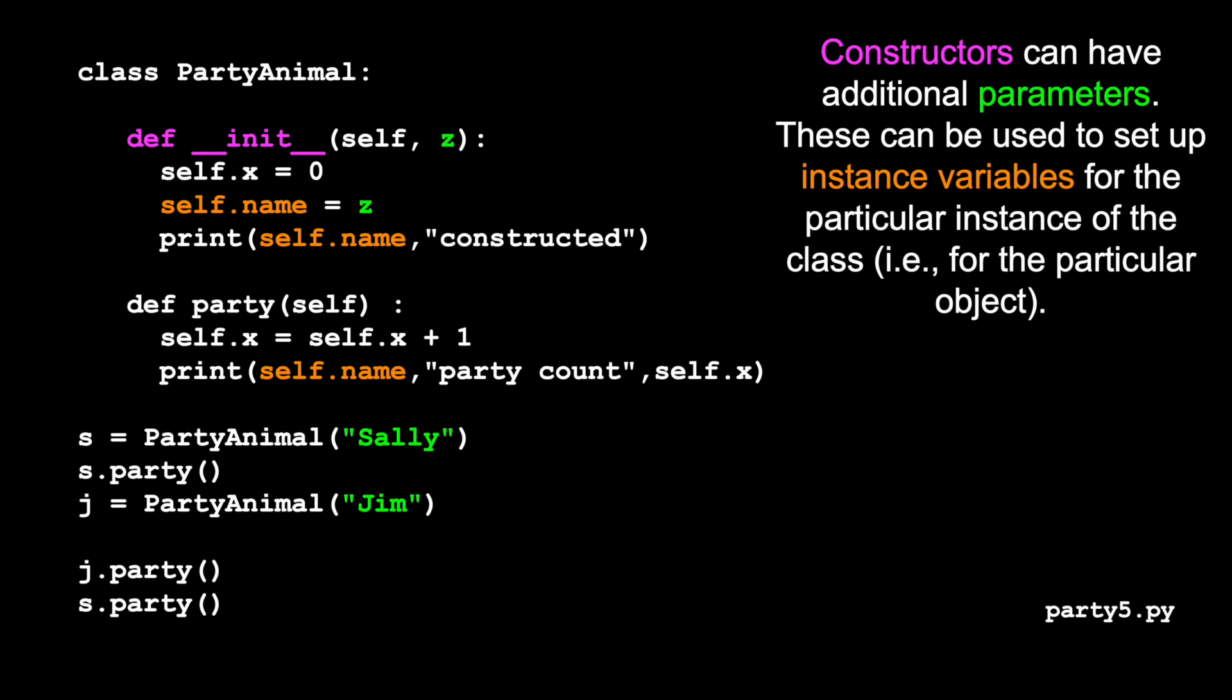So this code here, I've taken out the destructor and it shows a little bit more information. Now we're going to put two variables in here. We're going to have a current score or whatever and a name. And this time we're going to add a parameter onto the constructor.